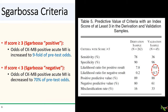How good are these criteria? If we look at the likelihood ratios, if your score is three or more — Sgarbossa positive — the odds of your patient having a CKMB-positive acute MI is increased by ninefold, which is pretty good. But if your score is less than three — Sgarbossa negative — the odds of a CKMB-positive acute MI is decreased by only 30% to 70% of the pretest odds.